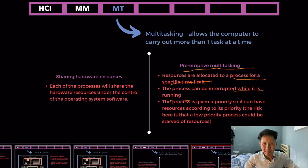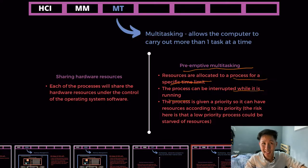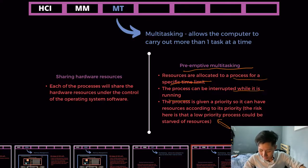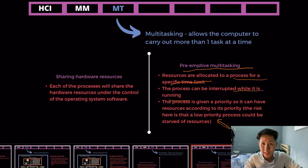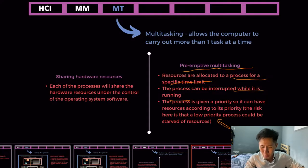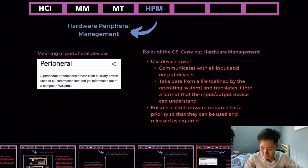Another type of multitasking is preemptive multitasking, in which resources are allocated to a process for a specific time limit and the process can be interrupted while running. Each process is given a priority so it can have resources according to that priority. Since many programs need to run at the same time, the OS assigns priority rankings to determine which programs should be given more resources and which should run first.